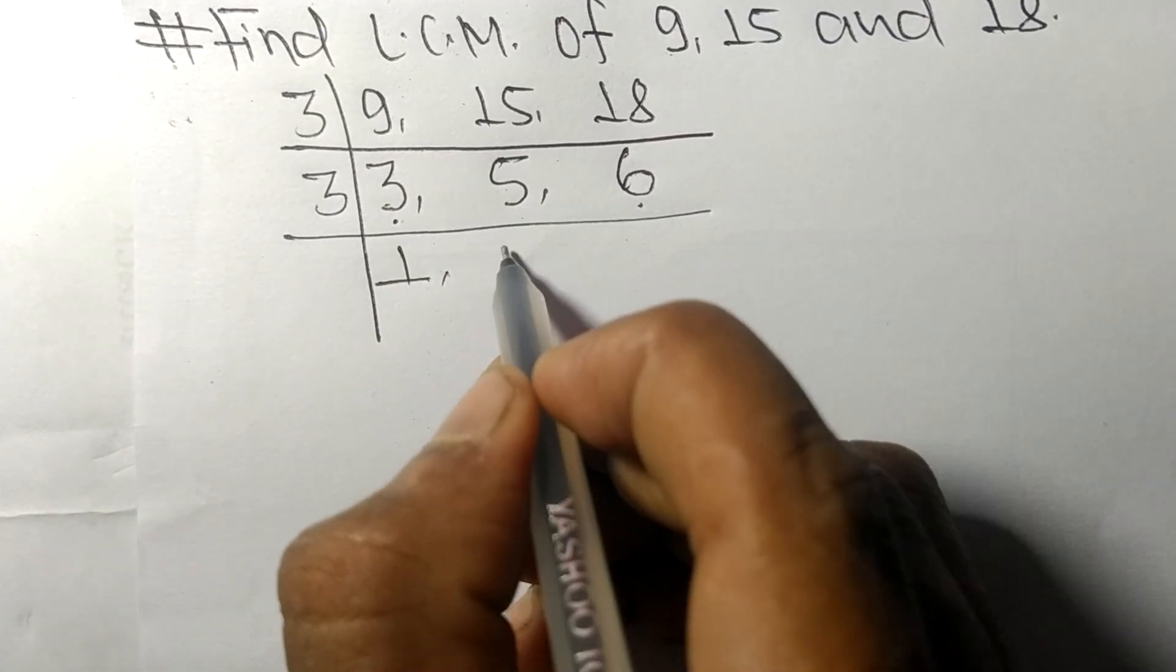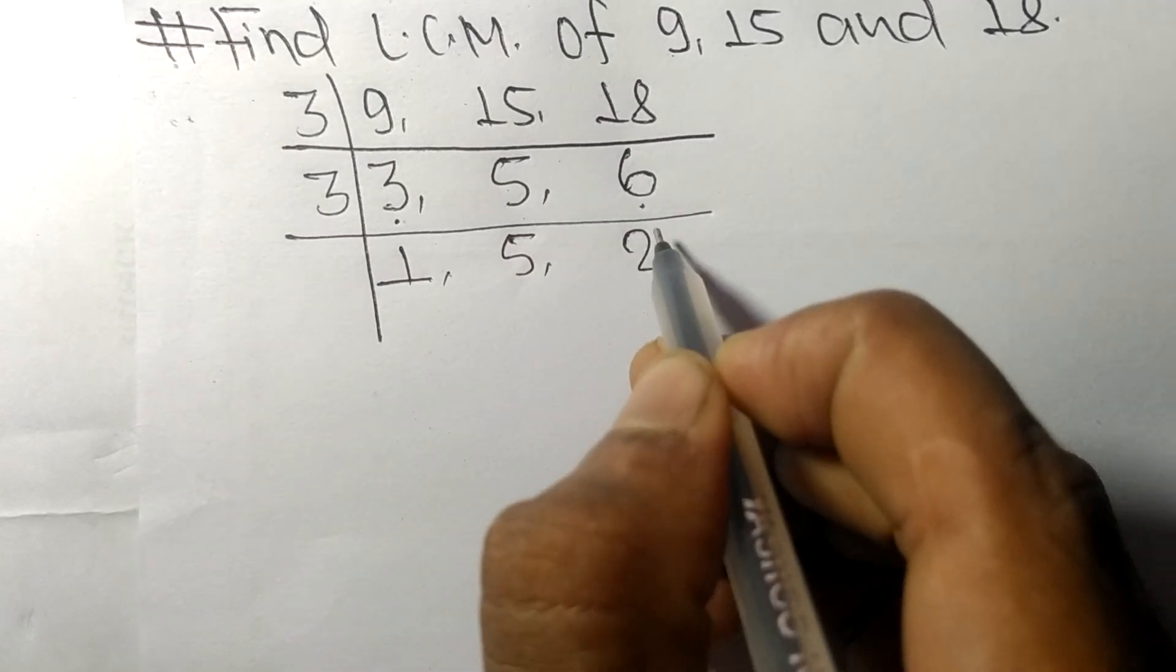3 times 1 means 3. 5 not divisible so it is same. 3 times 2 means 6.